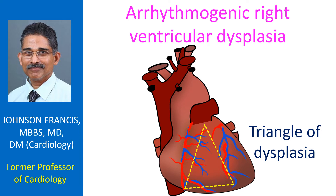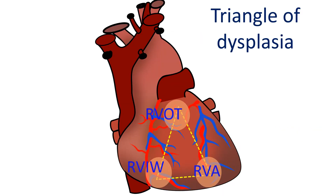This disorder is also called Arrhythmogenic Right Ventricular Cardiomyopathy. Pathological features of ARVD — namely the replacement of right ventricular myocardium with fat and fibrous tissue and aneurysms — are seen at the right ventricular apex, inferior or diaphragmatic aspect, and outflow tract. These regions together constitute the triangle of dysplasia.